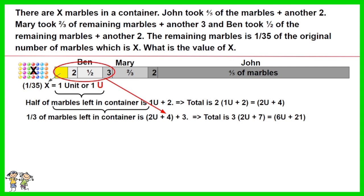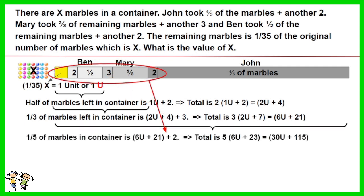One-fifth of total marbles before John took any of them is 6U + 21 + 2. Total marbles in the container are therefore 5(6U + 23), which is 30U + 115.